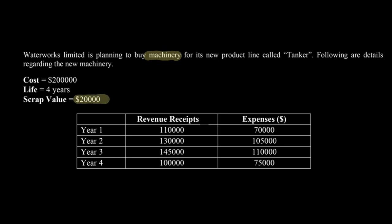So that's the receipt you will receive when you sell the machinery at the end of year four. Now, if you have the cost, life and scrap available, remember, we can use this information to calculate the depreciation expense every year. So let's calculate that. So we can use this equation cost minus scrap upon useful life. So that's $200,000 minus $20,000 divided by four. So the depreciation becomes $45,000 per year, something to take a note of.